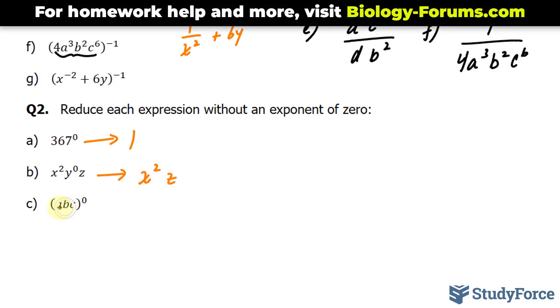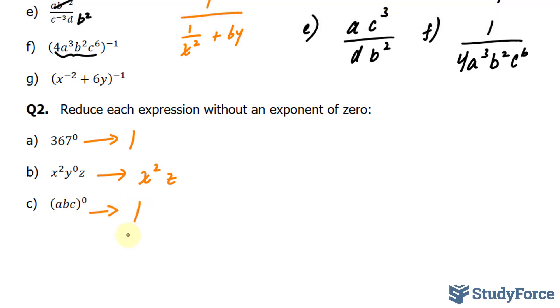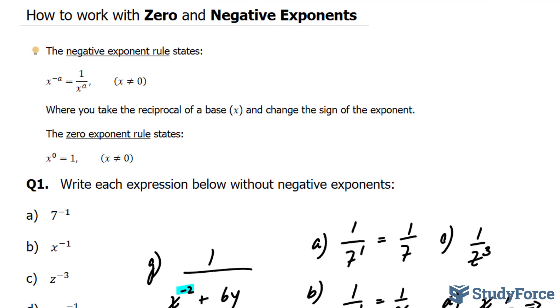And lastly, these three factors are being raised to the power of zero, so all of this reduces to 1. And there you have it. That is how to work with zero and negative exponents.